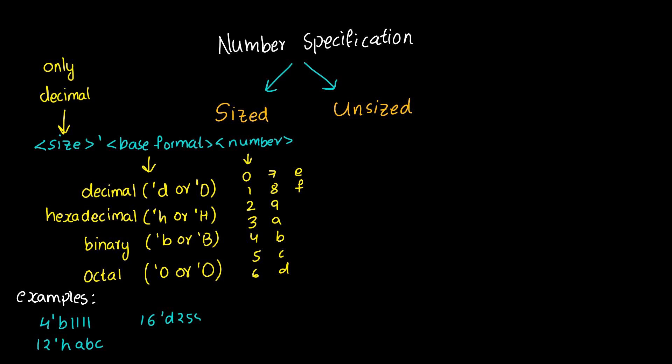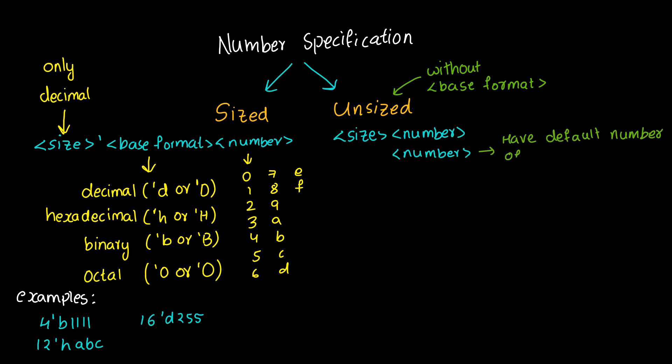Unsized numbers. Numbers that are specified without a base format specification are decimal numbers by default. Numbers that are written without a size specification have a default number of bits that is simulator and machine-specific, must be at least 32.